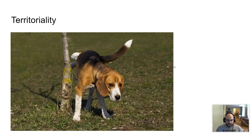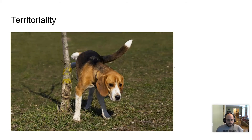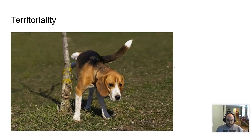With mammals, territoriality is a big concept. Mammals will mark their territory in various ways. Here you see a dog marking its territory, explaining to other dogs that this is where he lives — though he's essentially acting as he would in the wild. Marking territory warns other competitors, alerts others that may be there, and can also attract mates and communicate social status.